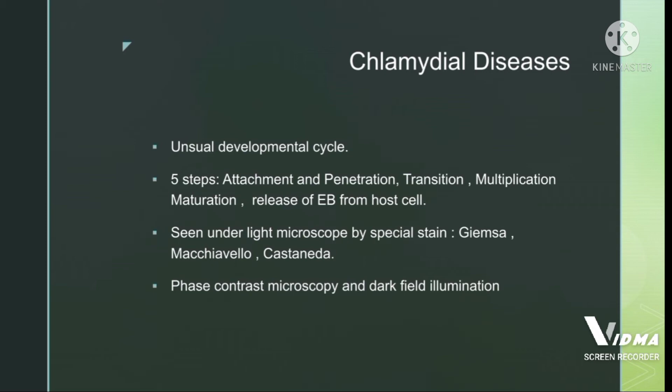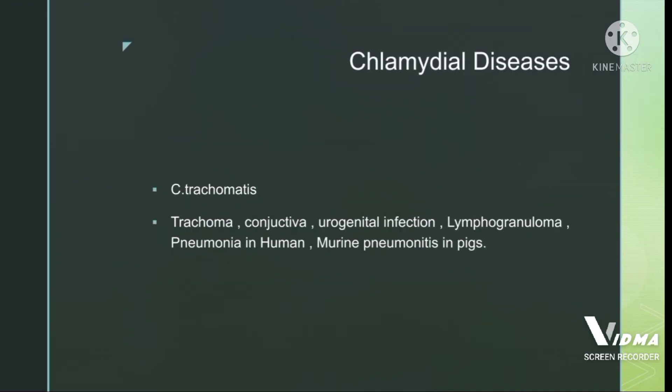The developmental cycle has five steps: attachment, penetration of the elementary body, transition, multiplication, and maturation, followed by release from the host cell. During transition, the elementary body converts to the reticulate body, which then multiplies by binary fission, matures, and is released as elementary bodies. It can be seen under the light microscope using special stains — an important objective point: Giemsa, Macchiavello, and Castaneda stains.